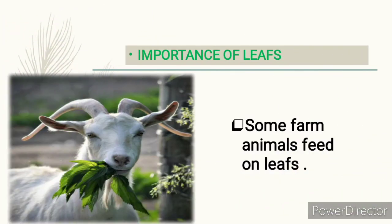Now let's look at the importance of leaves. What's this? This is a goat. What's this goat doing to these leaves? The goat is eating the leaves! So some farm animals feed on leaves. This is the first importance of leaves — animals feed on leaves, they eat leaves. Have you ever tasted any leaves before? Think about it and tell me which leaf you have eaten.